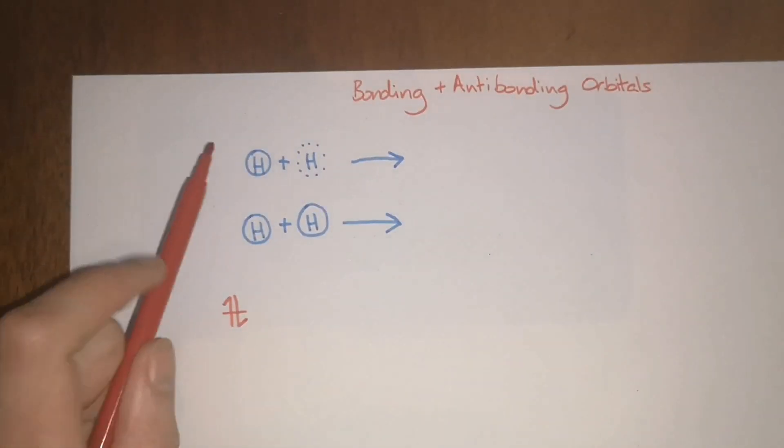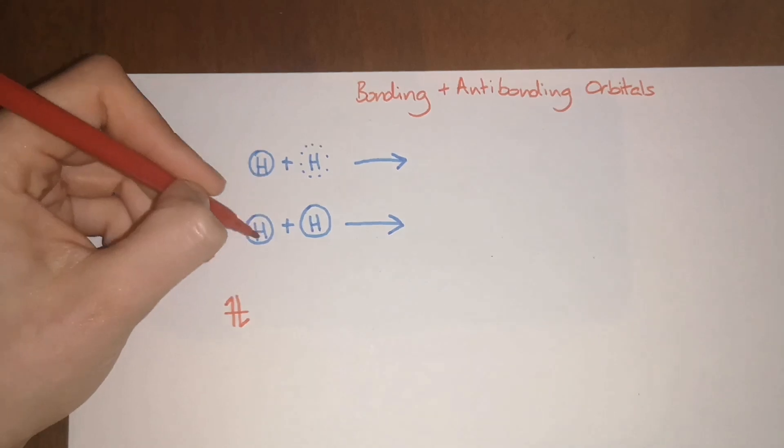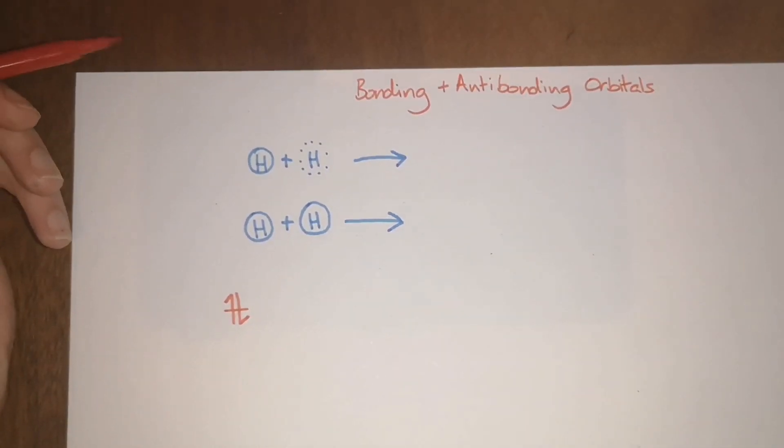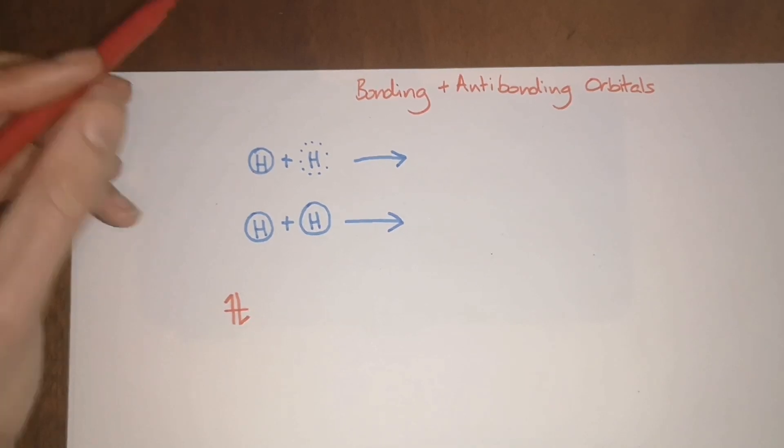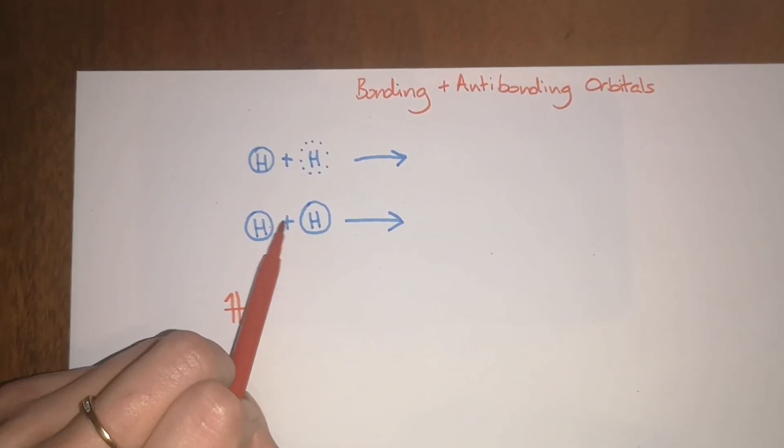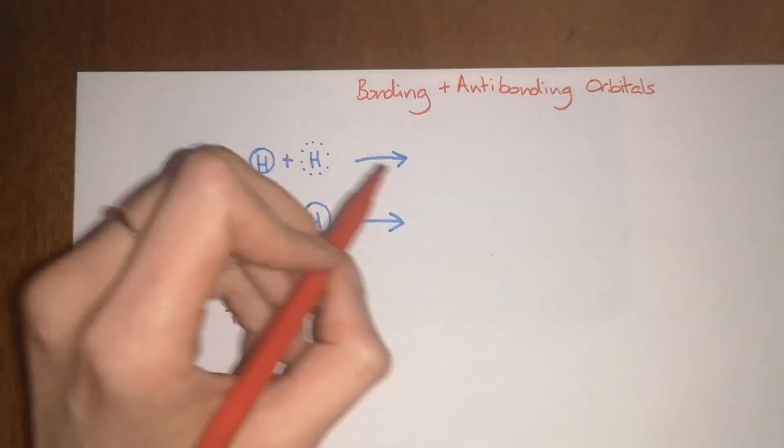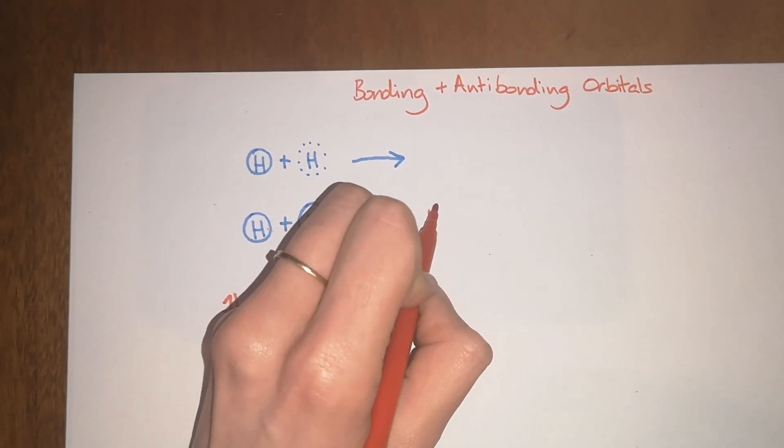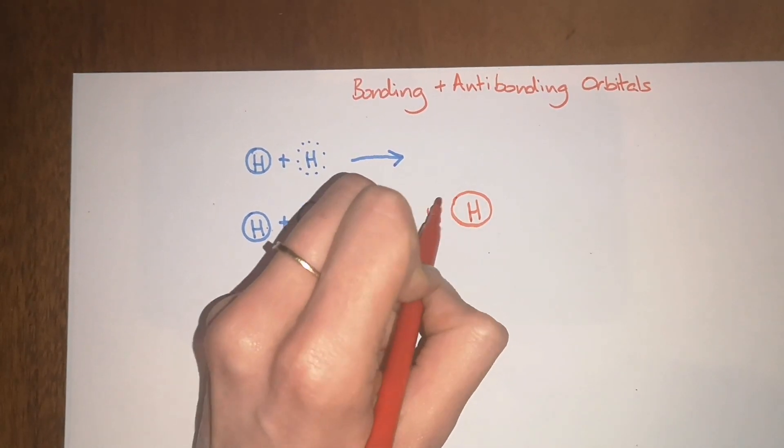If you imagine that these two orbitals come from one hydrogen atom and these two orbitals come from another hydrogen atom, in this case the orbitals are in phase. So when the two hydrogen atoms get very close to each other, they will form an overlapping bond called a sigma bond.